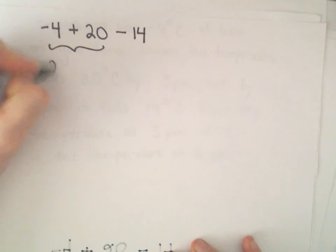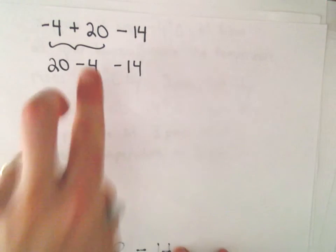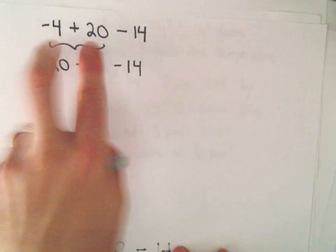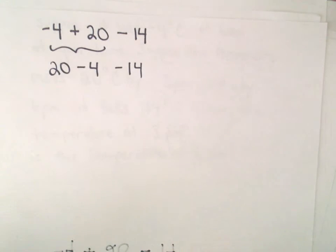Equivalently, you can think about this as being positive 20 minus 4 minus 14. So again, remember these are commutative. We can just switch the order on these and we'll still get the same thing. So I'm going to use that little property.